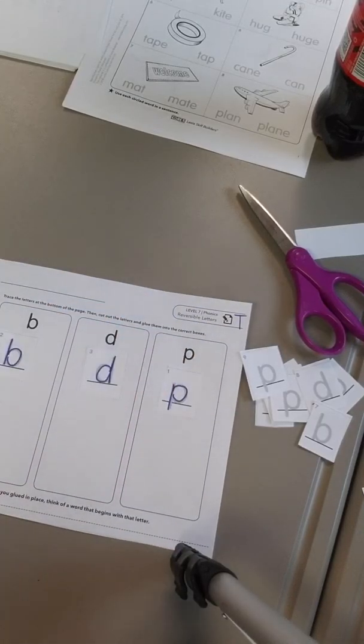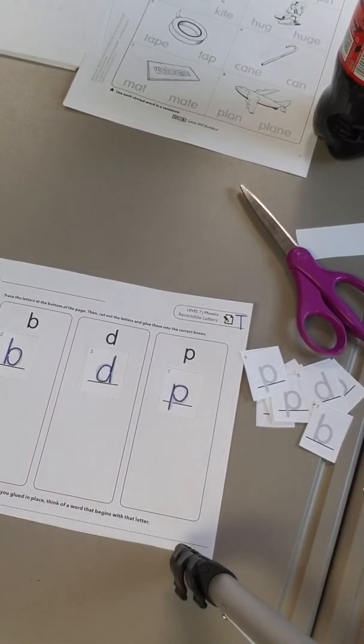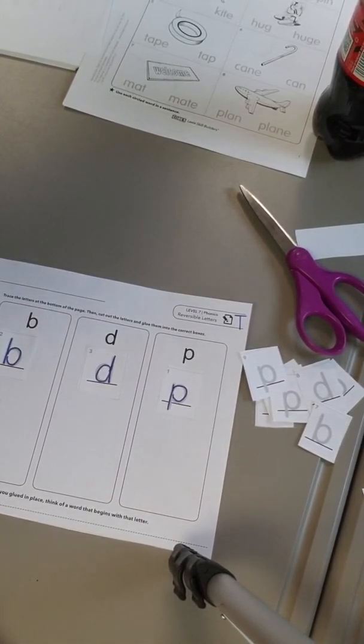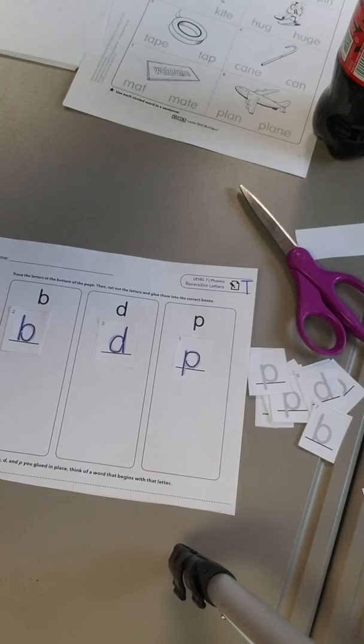All right. Go ahead and do this with the rest of them. Make sure you've traced everything. Once you've finished that, you can hop to sheet U. Once you've finished all three sheets for this week, you can move into Moby Max, Lexia, or you could read your book.